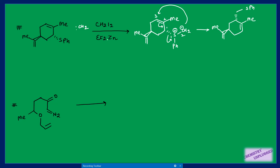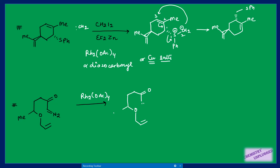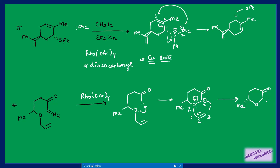Instead of Simmons-Smith reagents, we can use rhodium as a catalyst with alpha-diazo carbonyl compounds, or copper salts as a catalyst. This question type is very common in NET examinations. The rhodium catalyst removes nitrogen from the diazo compound to generate a carbene. The oxygen lone pair, being electron-rich, attacks this carbene, generating a negative charge on carbon and positive on oxygen. This participates in a [2,3]-sigmatropic shift, giving trans as the major product.